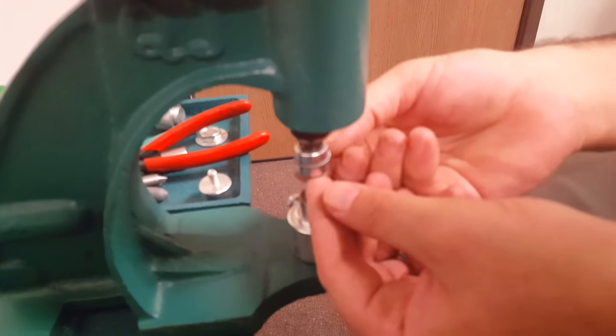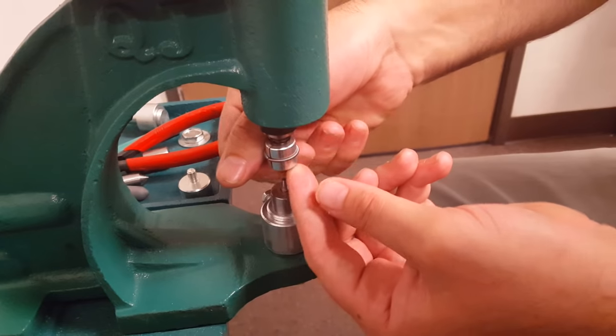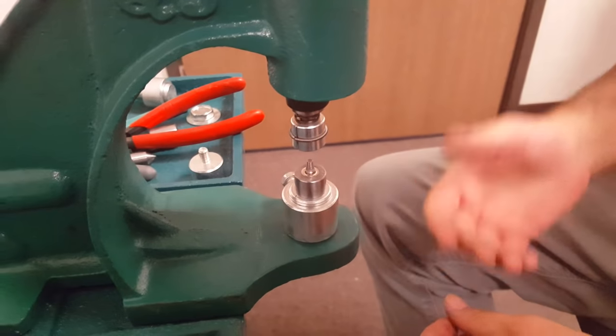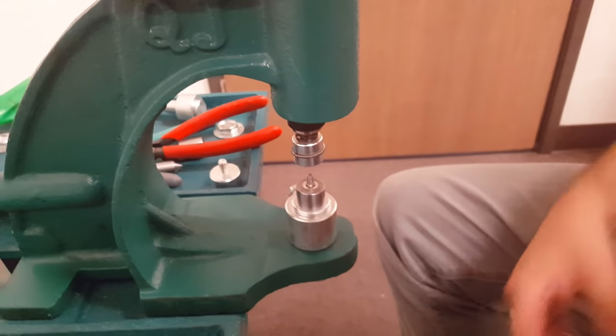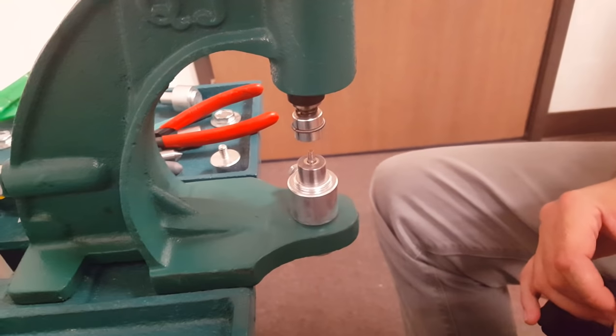And this machine, you could use any type, any size of grommets. From the smallest one, 1-16, all the way to grommets for curtains, which are number 15. Or snaps, or rivets, or eyelets.